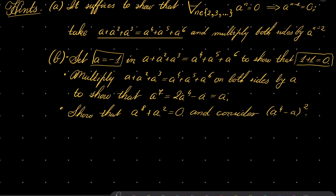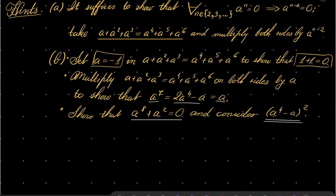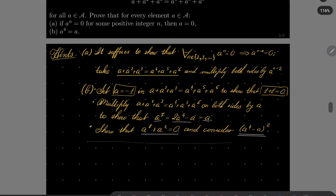So, show that 1 plus 1 is 0, and then multiply our equation on both sides by A to show that A to the power of 7 equals A. Then show that A to the 4th power plus A squared is 0, and consider the expression A to the 4th power minus A squared. Give this problem a try, using part A, and I will see you in just a minute.